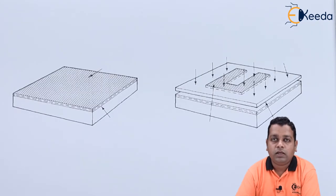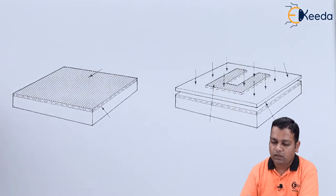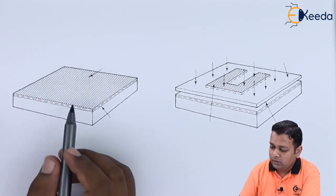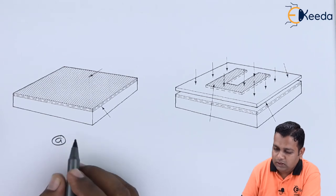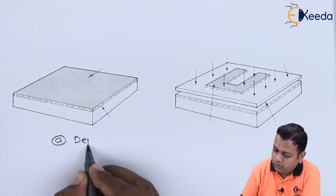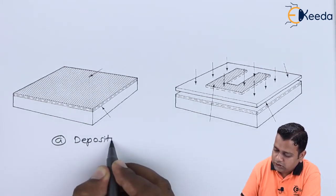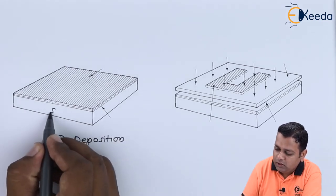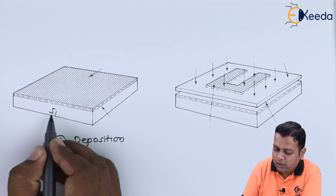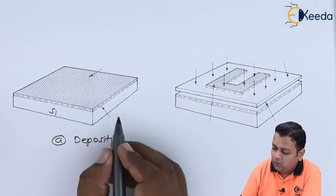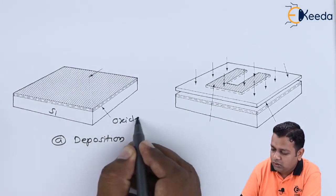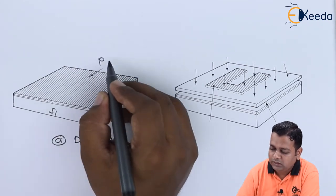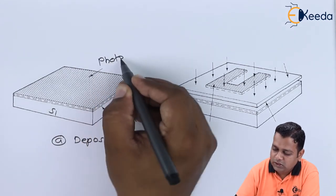Now here one example can be discussed where we can have the illustration of the photoresist technique. So in the figure part A we can see here, it is the process of deposition. So for deposition we have the semiconductor material here, for example the silicon. Whereas the oxide can be shown above it, and here at the above place we have the photoresist material.